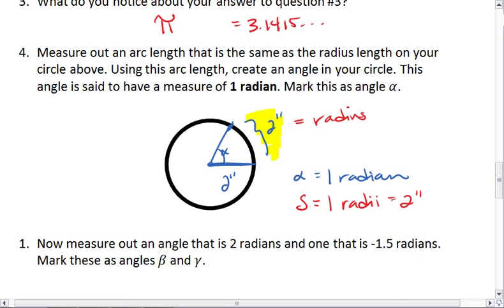Now we can measure out another 2 inches on our arc length. The angle we then create, this angle here, we'll name it beta. Beta is 2 radians, because the arc length that it cuts off is 2 radius lengths long. It's 4 inches, which is double the radius.